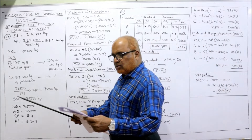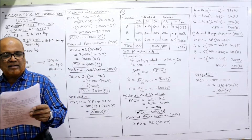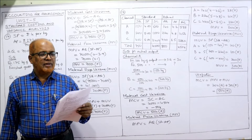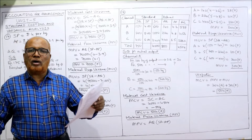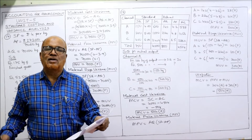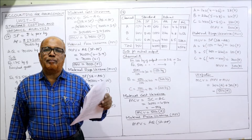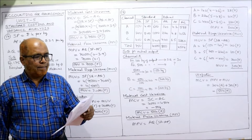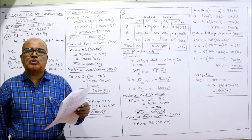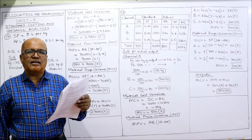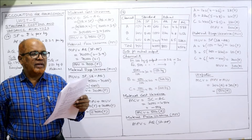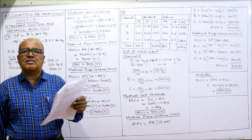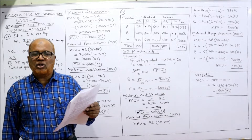Now the second problem. The standard material cost for 100 kilogram of chemical X is made up of chemical A, B, and C. Chemical A: 30 kilogram at 4 rupees per kg; chemical B: 40 kilogram at 5 rupees per kg; chemical C: 80 kilogram at 6 rupees per kg. This is the standard for making 100 kilogram of output.